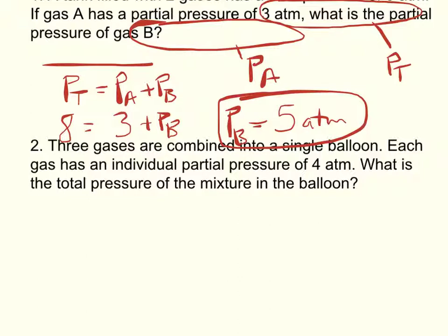Check yourself. Add up the partial pressures. Do they equal the total? Well, 5 plus 3 equals 8. That checks.